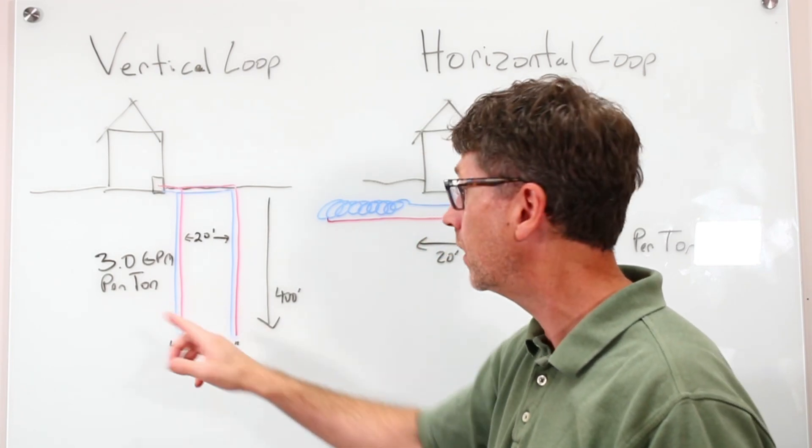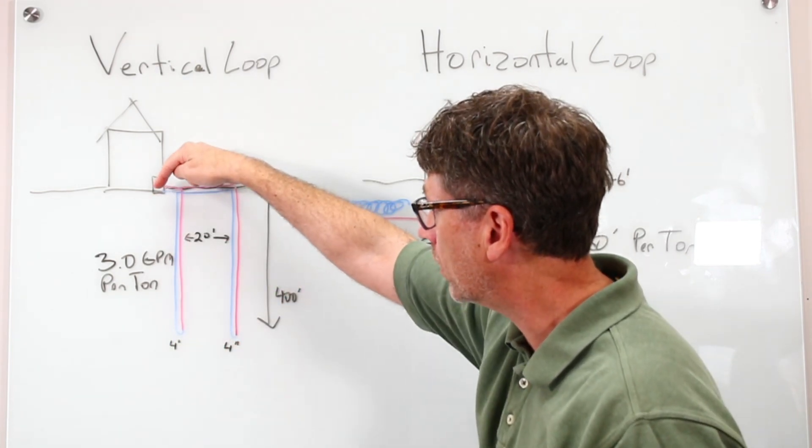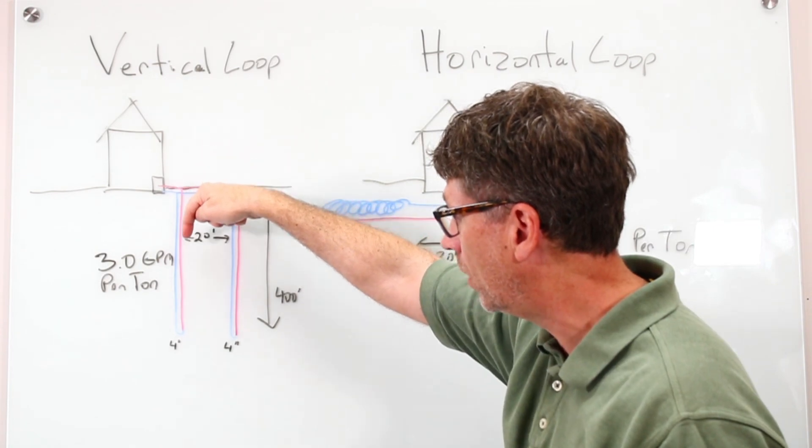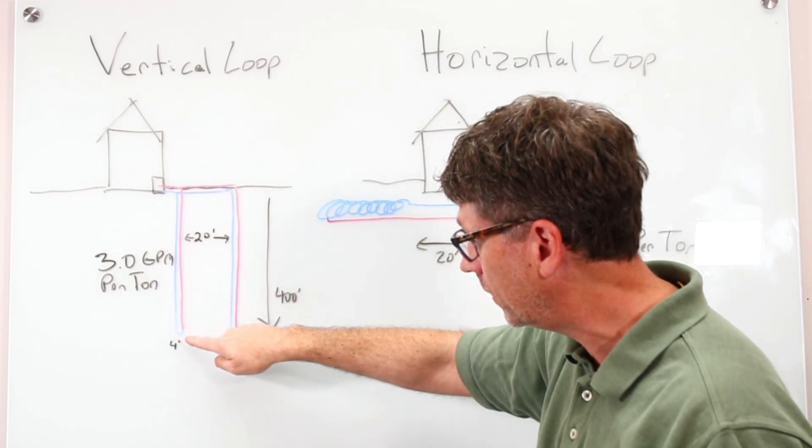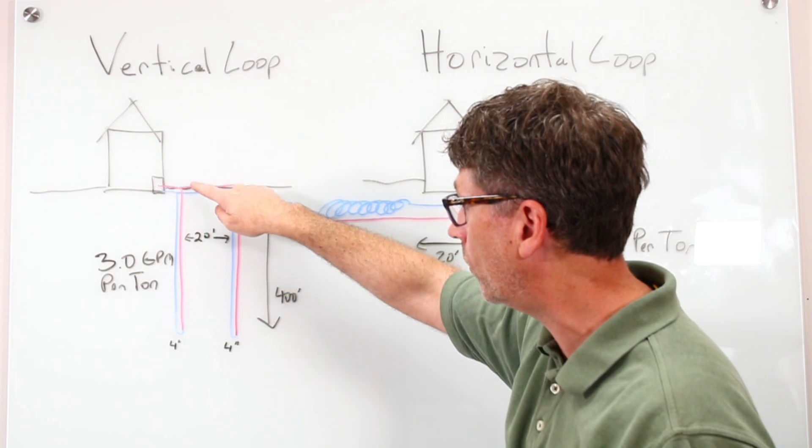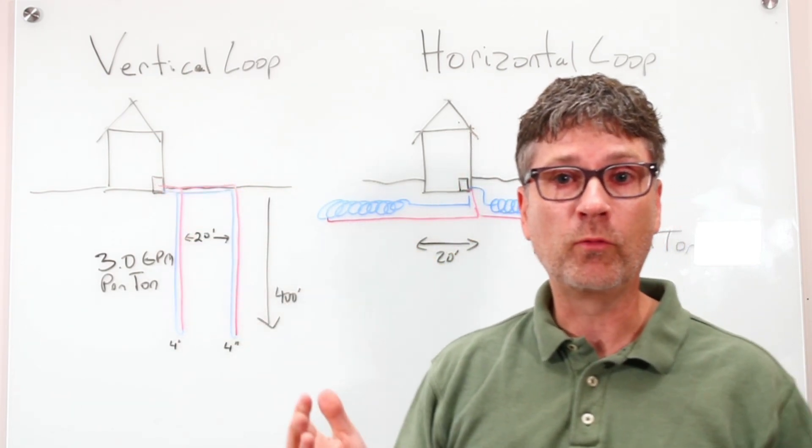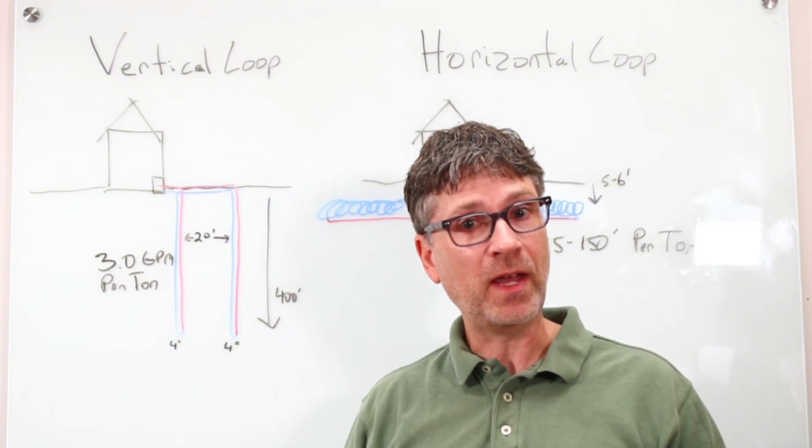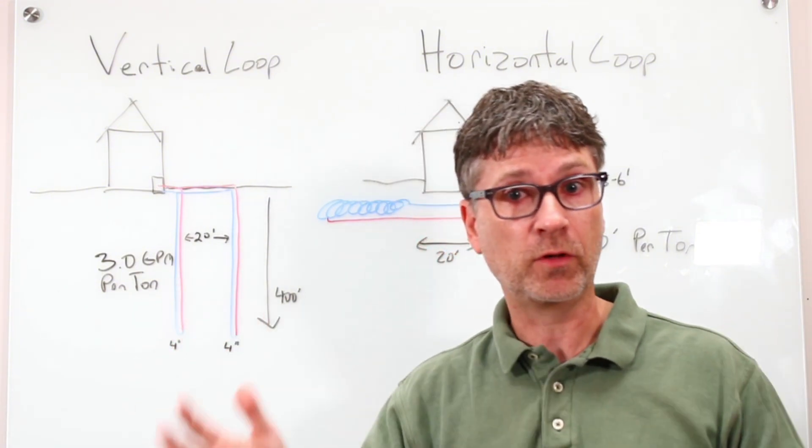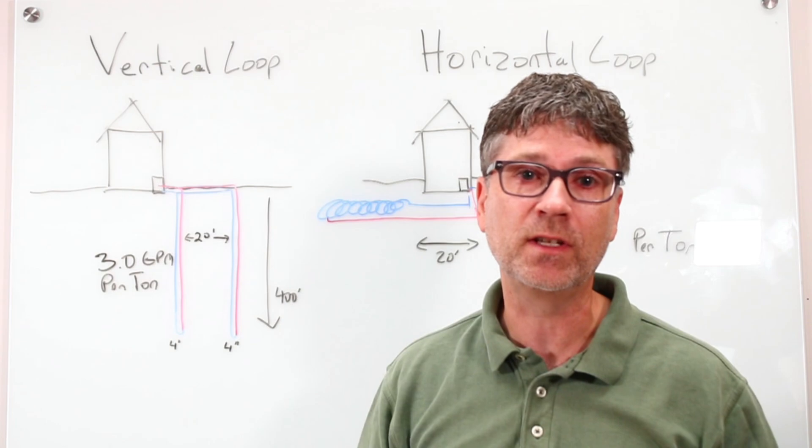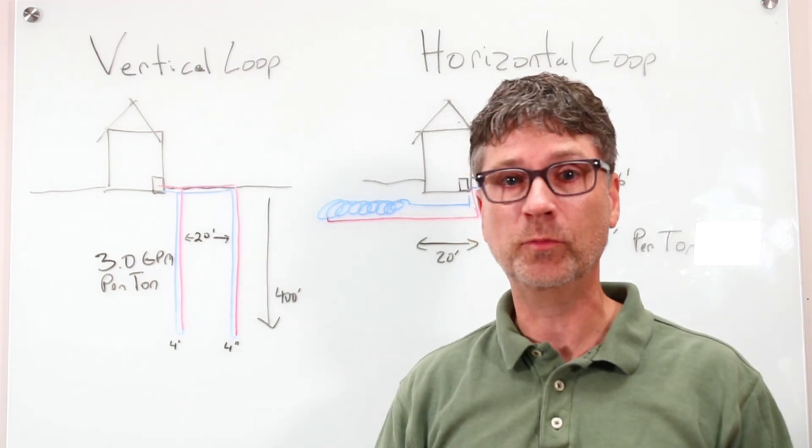The water comes out of the geothermal system, all the way down the bottom of the loop, comes back around, and then goes right back out to the geothermal system. Vertical loops are really good when you have limited space. They don't take up much of your yard, and your landscaping doesn't get disturbed, like in some of the other loop choices.